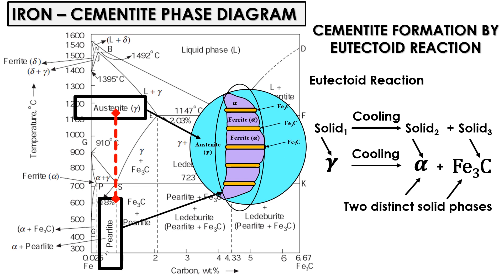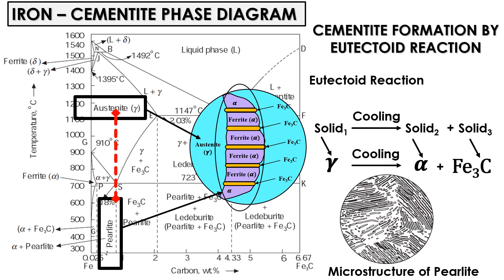This pearlite phase consists of alternating layers of ferrite and cementite that give pearlite its distinctive lamellar or pearly appearance when observed under the microscope. This microstructure contributes to the mechanical properties of the steel, such as its strength and hardness. The eutectoid reaction is also an invariant reaction which occurs at constant temperature and composition. Its reaction mechanism will also be discussed in this lecture series.